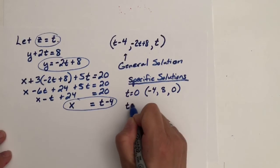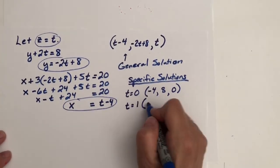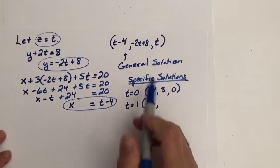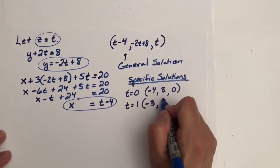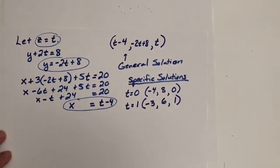We could find more solutions. Substitute in t equals one, and we would have one minus four, negative two times one plus eight, and one.